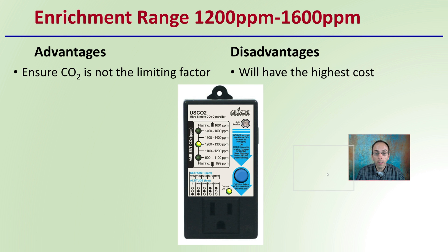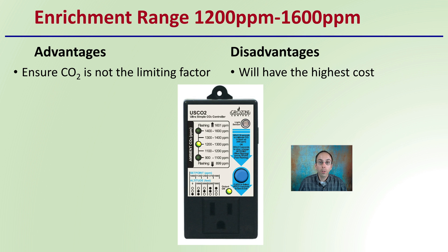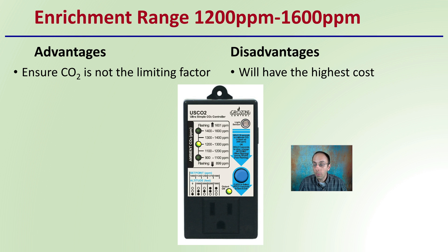Then we have the upper end of the range: 1200 to 1600 parts per million. The advantage is that it ensures carbon dioxide will not be limiting. However, the disadvantage is it will have the highest cost, simply because you are adding a high dosing level of carbon dioxide from a plant standpoint. So we have to weigh all these different factors — what range of carbon dioxide levels are you going to keep your plants at?